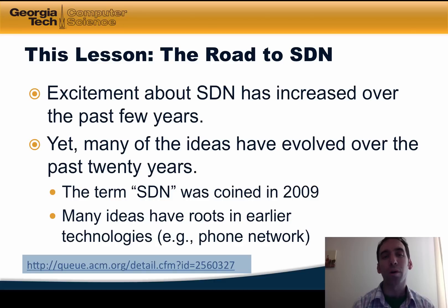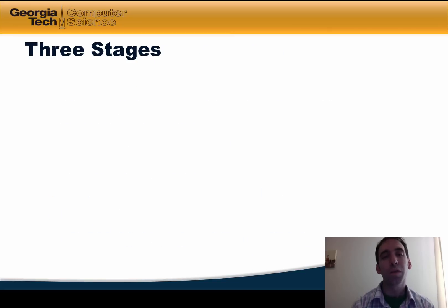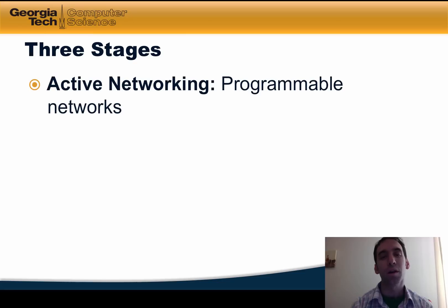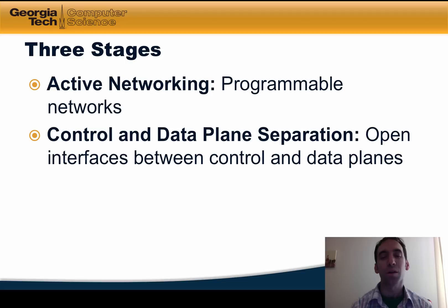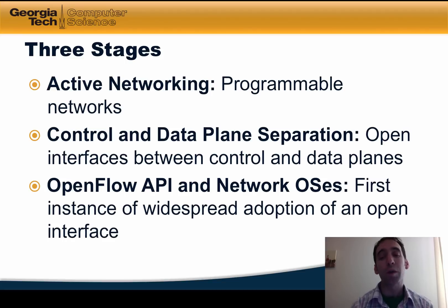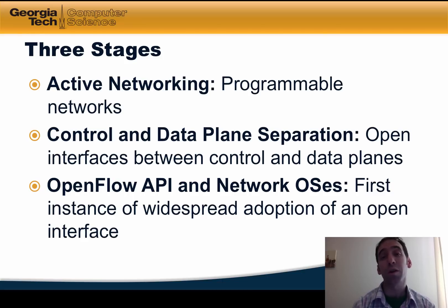You can read more about the material covered in this lesson in the article linked below. We can think about the intellectual history of software-defined networking as proceeding in three stages: active networking, which introduced the notion of programmable networks; control and data plane separation, which offered open interfaces between control and data planes; and the OpenFlow API and network operating systems, which was the first instance of widespread adoption of an open interface between a control plane and programmable routers and switches. For each of these stages, we'll talk about the intellectual contributions, as well as various myths and misconceptions surrounding that technology.